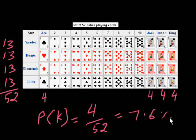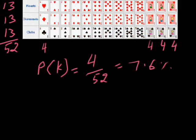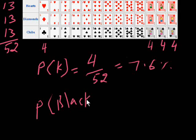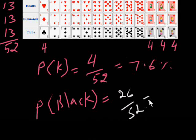Like this, queen's chance is also 7.6%, jack's chance is 7.6%. But the chance of black cards: 26 divided by 52, the chance is 50%.